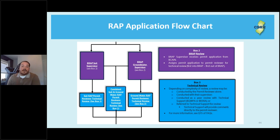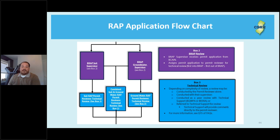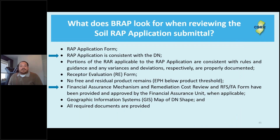The permit reviewer reviews all required documents provided for the permit application. More complex cases may be referred to technical support — for example, Groundwater Pollution Abatement may review a bedrock investigation on behalf of the permit reviewer, or a permit reviewer may conduct a peer review with BERA to discuss a deviation from the department's vapor intrusion technical guidance. Now, what does BRAP look for when reviewing the soil WRAP application submittal?